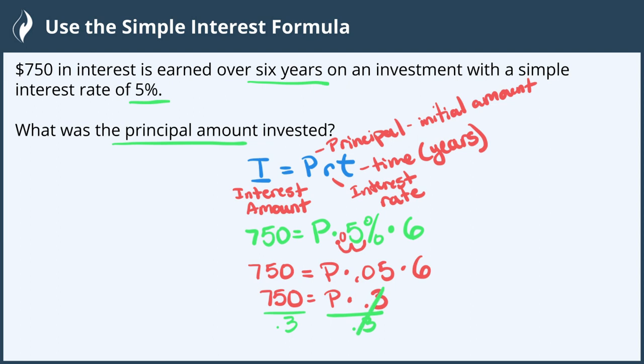On the right side, 0.3 cancels, and on the left side we get 750 ÷ 0.3 = 2,500. That is the principal amount.